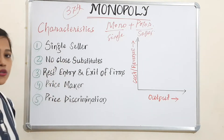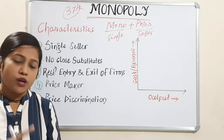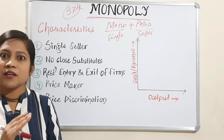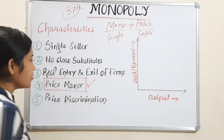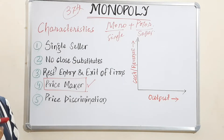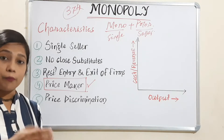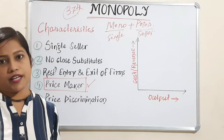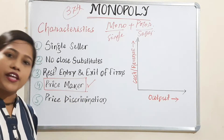Next is no close substitute — that particular product is only available with that one seller. Only one person has that product, meaning he can charge any price according to his wish — or more precisely, according to his profit scenario. That is why in monopoly market, the single seller is a price maker. Price maker means they can set any price according to their profit. In contrast, in perfect competitive market, sellers are price takers — whatever price gets fixed, they have to take it.